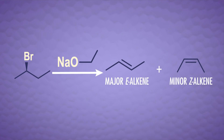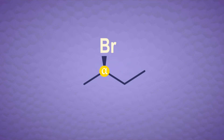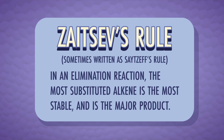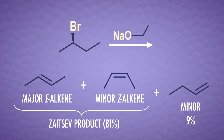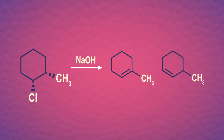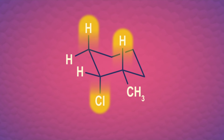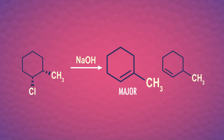So we took 2-bromobutane, did our E2 reaction, and have major and minor alkene products. But 2-bromobutane has one alpha carbon attached to the bromine, and two beta carbons, so there are two places the carbon-carbon double bond could form. Zaitsev's rule describes this pattern: in an elimination reaction, the most substituted alkene is the most stable and is the major product. For the E2 reaction with 2-bromobutane, we mostly get the Zaitsev product. To make sure we understand Zaitsev's rule, here's another example with cis-1-chloro-2-methylcyclohexane. In its chair conformation, the hydrogen and the chlorine leaving group must both be axial to be anti-periplanar. Following Zaitsev's rule, the major product is the one with the most substituted double bond, 1-methylcyclohex-1-ene, and the minor product is 3-methylcyclohex-1-ene.